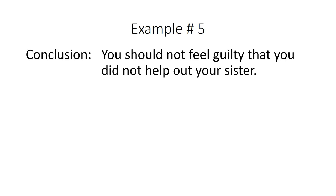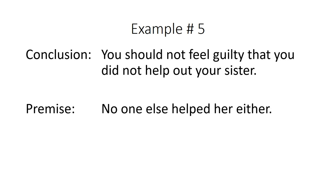Example number five: you should not feel guilty that you did not help out your sister — no one else helped her out either. You can sense where the problem is in this fallacy, especially when it comes to family. You didn't help her, and no one else helped her either. But you're still feeling guilty because you know it was the right thing to help out your sister, even though nobody else did. So we don't follow the people as our guides — we follow our conscience, we follow evidence, and we follow facts to support our conclusions.